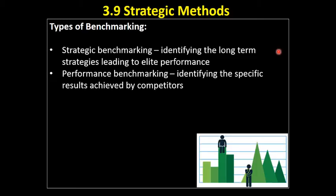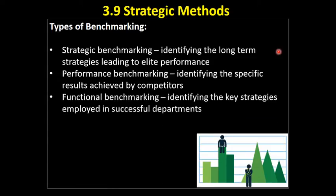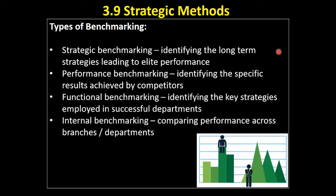We may also do performance benchmarking, where we identify the specific results achieved by our competitors. It's more useful when looking at companies within the same industry, because companies in different industries will have different profit margins and different levels of sales. With performance benchmarking we tend to look at direct competitors, identify the results the best-performing competitors are achieving, and compare our performance to that. Functional benchmarking looks at key strategies employed in successful departments across different organizations.